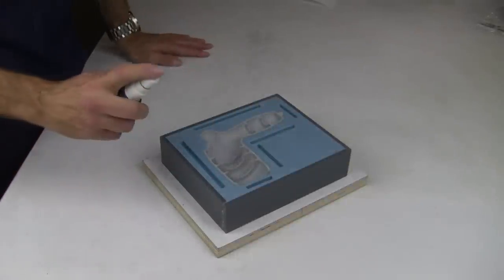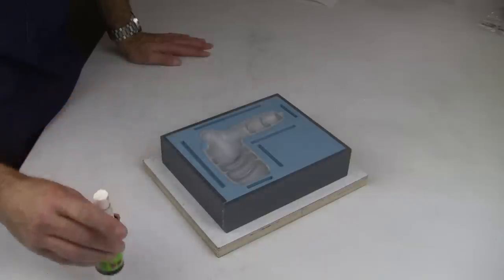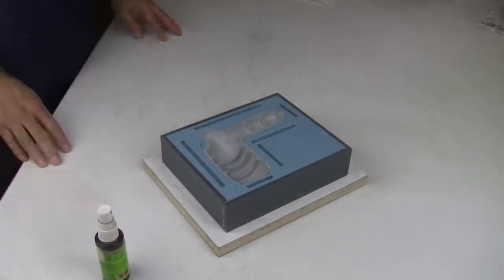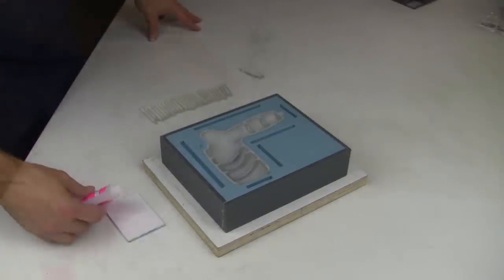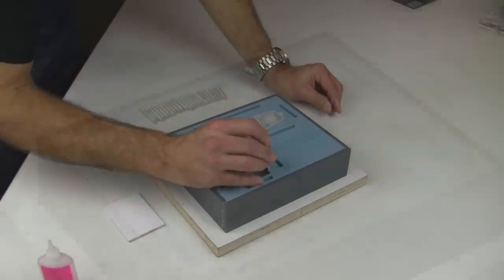We apply a mist of CA accelerator onto the pattern to make our vents bond on contact instead of fumbling for the spray bottle later. Dispense a small amount of CA glue onto a pad and dip the ends of the vents before placing onto our pattern.